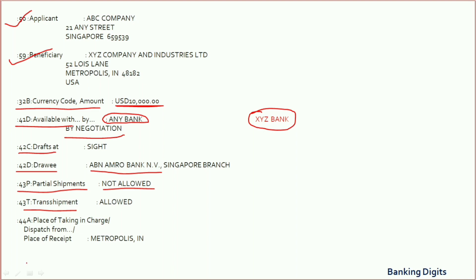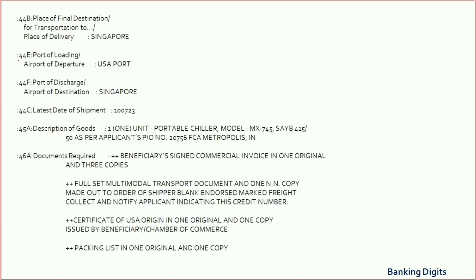Field 44A states the place of taking in charge, or dispatch from, or place of receipt. This field generally means transport documents should evidence that goods have been dispatched from this place. Field 44B states the place of final destination, or for transportation to, or place of delivery — transport documents should evidence that goods have been dispatched to this place.